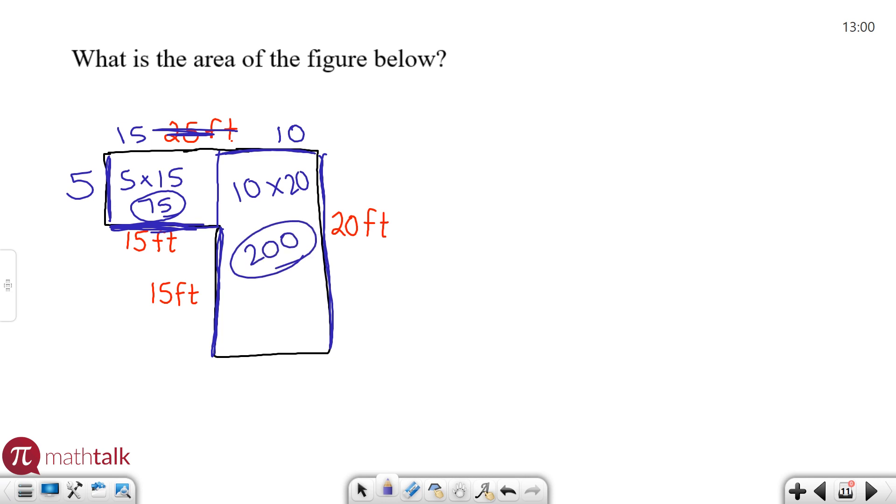I now know the area of each of those. I can add them together to get my total area, which is 200 plus 75 or 275 feet squared, because all area units are square units. And so there's the area of my composite figure. Let's take a look at a couple of other examples that you may see on the geometry section of questions on your test.